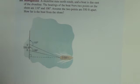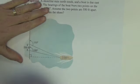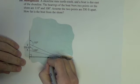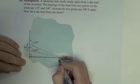The last example. It says a shoreline runs north-south and a boat is due east of the shoreline. The bearings of the boat from two points on the shore are 110 degrees and 100 degrees. Assume the two points are 550 feet apart. How far is the boat from the shore?